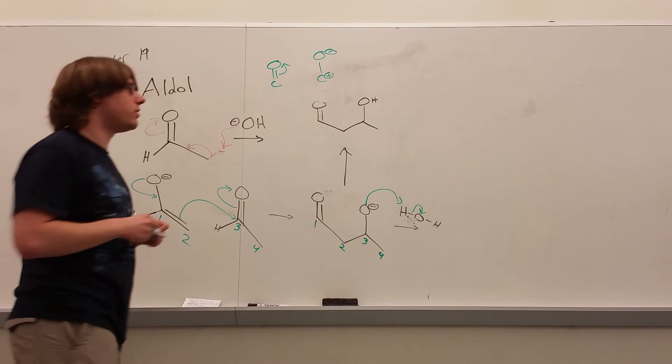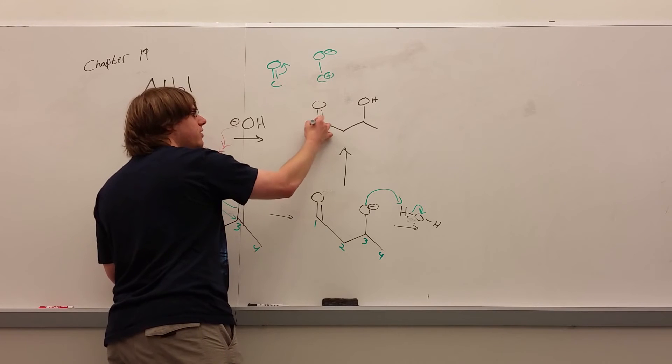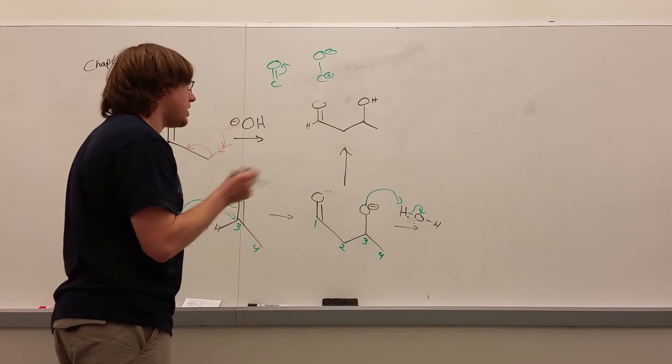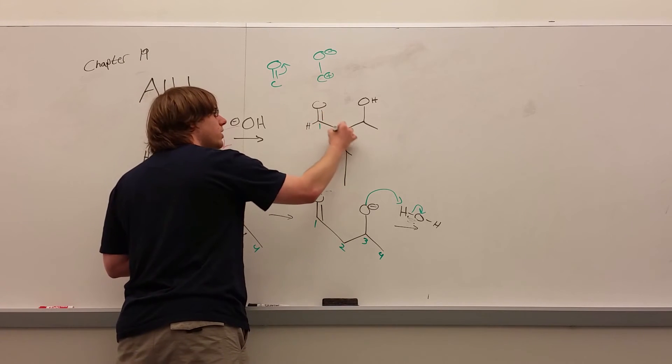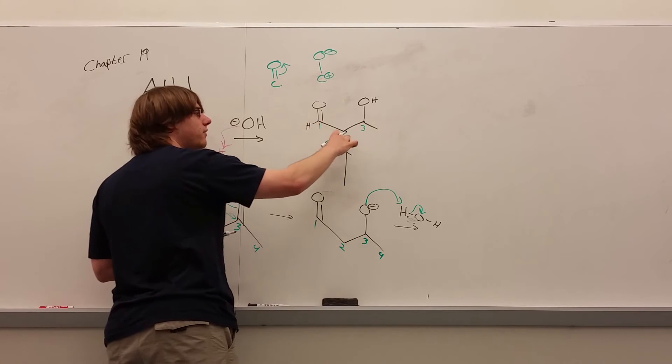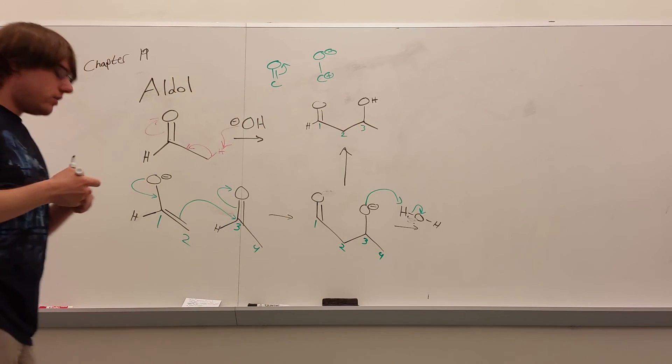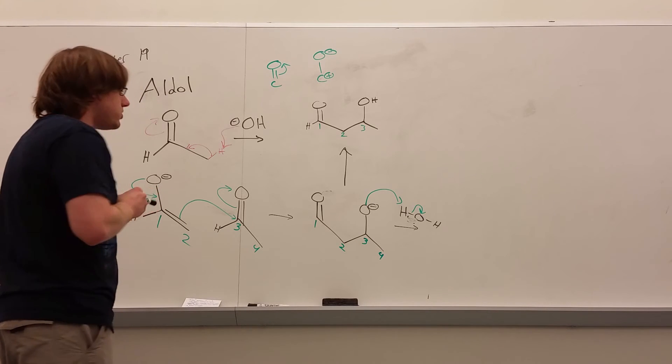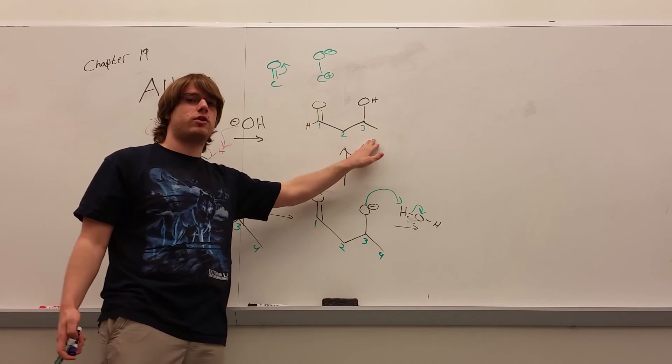And this is where the name aldol comes from, because one, I have an aldehyde. This carbonyl right here is an aldehyde. All alcohol over here. And one thing to point out, because this will be important later on, is the positions of these groups will always be one, two, three. Carbonyl on one, alpha carbon on two, OH carbon on three. This will be a trend that I'm going to point out in a second why it's so important. But the net result of any aldol should be one carbonyl and one OH group left over at the end.